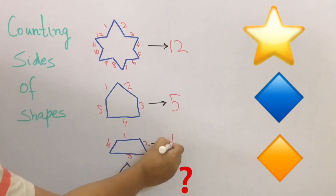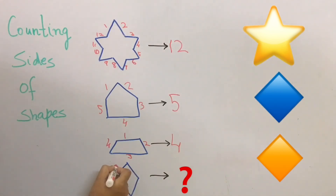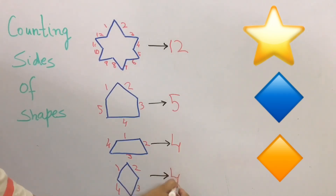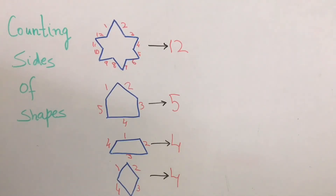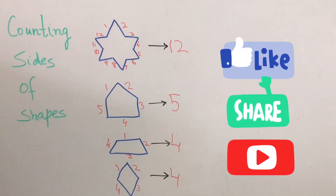Next shape is a diamond. Let's count the sides of the diamond — one, two, three, and four. So diamond has four sides. You see, you can try this at home — you can do it with slate and chalk or with a whiteboard.